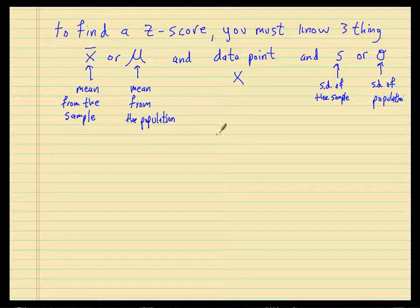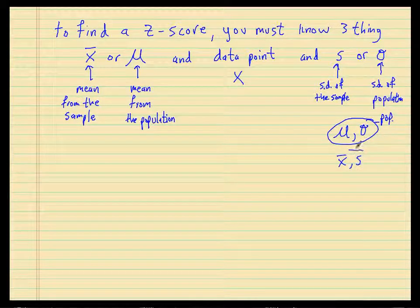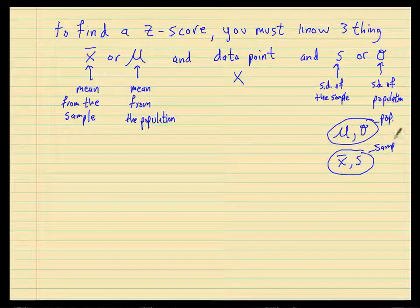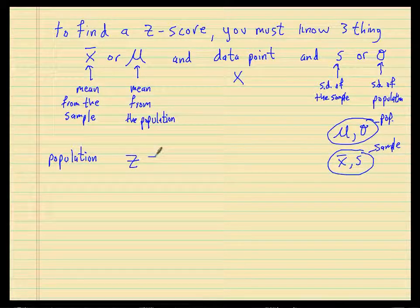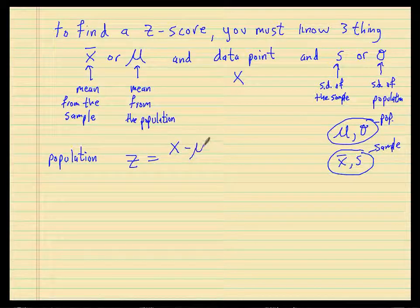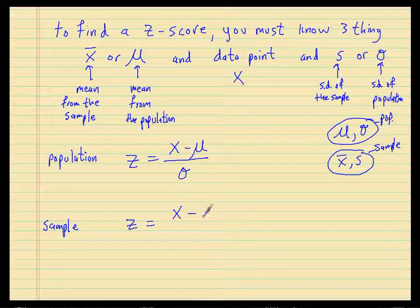So I can write two formulas. Mu goes with sigma and describes the population; x-bar goes with s and describes the sample. If you're dealing with a population, z equals your x value minus the mean, divided by sigma. If you're dealing with a sample, the z-score will be your x minus the sample mean, divided by s.